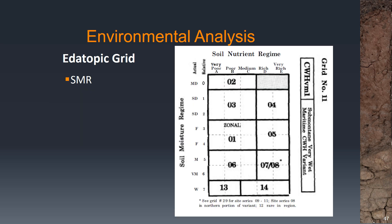Now that we've figured out the SMR and SNR, we can open up our edatopic grid — and remember there's a separate edatopic grid for every subzone or variant. In this case we have the grid for CWHVM1, which we've established is our biogeoclimatic unit. Our SMR was a 3, or submesic. Keep in mind we have relative and actual soil moisture regimes, and that key was for the relative regime. Based on this edatopic grid, a relative SMR of 3 corresponds to an actual SMR of F for fresh.